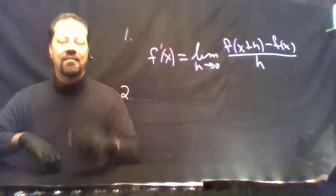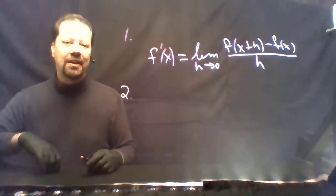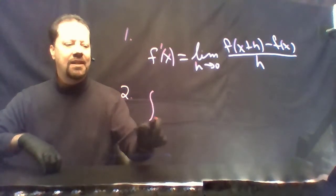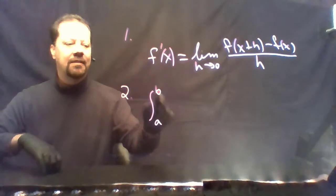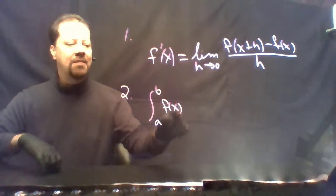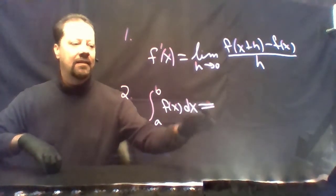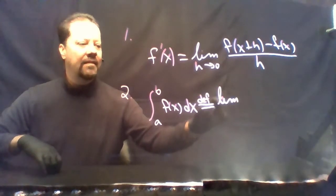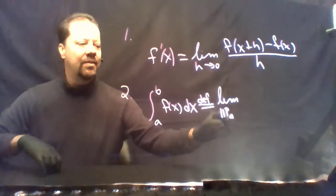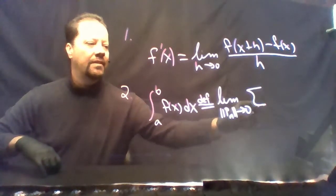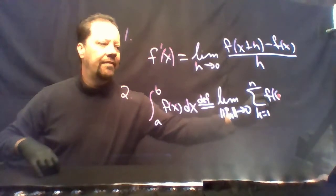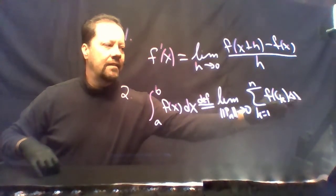Question 2: State the definition of the definite integral. There are different ways of stating this definition; I just want you to give the following. The integral from a to b of f of x dx is, by definition, the limit as the norm on the nth partition goes to 0 of the sum as k goes from 1 to n of f of c_k delta x_k.